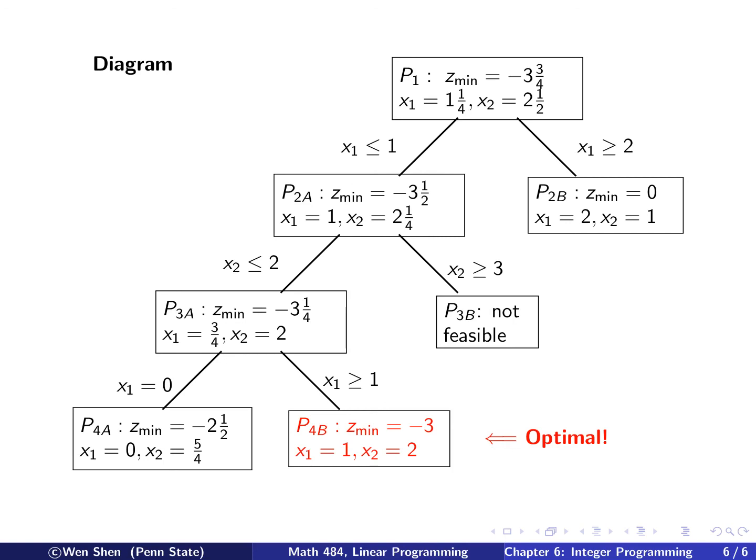So we send those two in LP Assistant and we solve them, and then we add it to the diagram. Level 1, level 2, level 3, and now level 4. So x1 is 0 gives me this solution. So here this solution is still not integral, and this one is an integral solution. So x1 is 1, x2 is 2, and the minimum is negative 3.